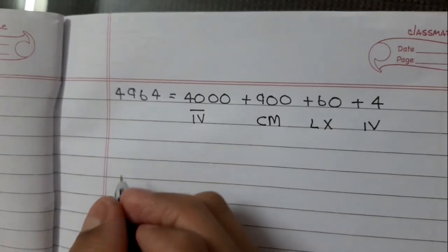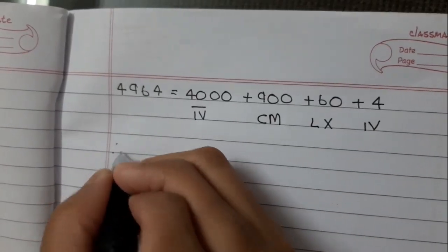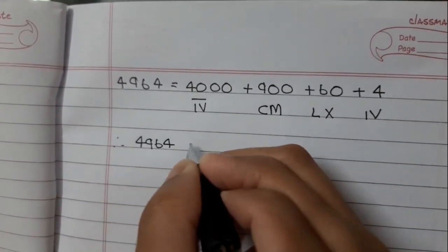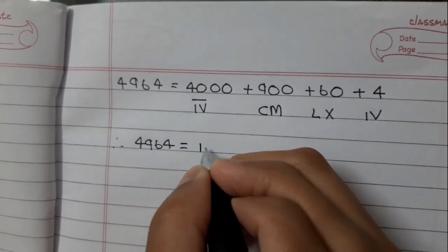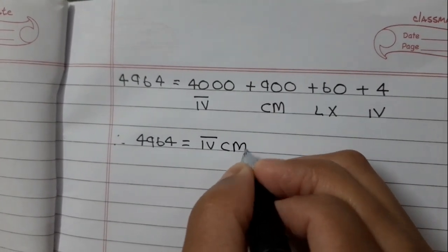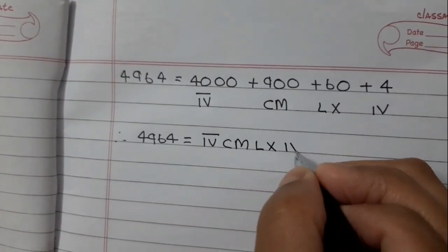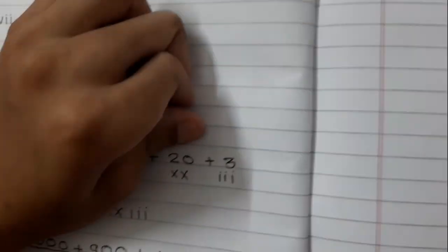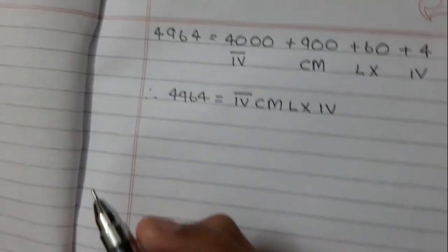Let's join it together. Therefore, 4964 equals IV bar CM LX IV. If you want to write 4 M's like MMMM, you can write that, but it will be lengthy.